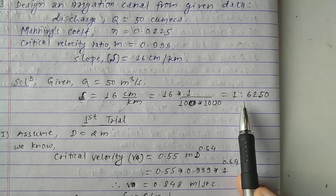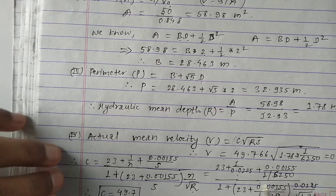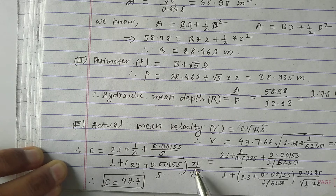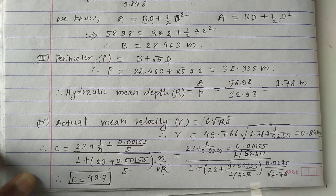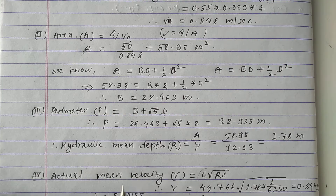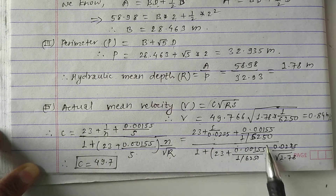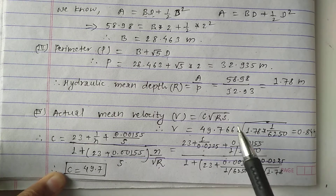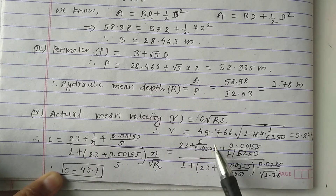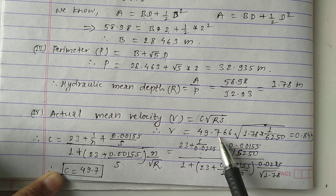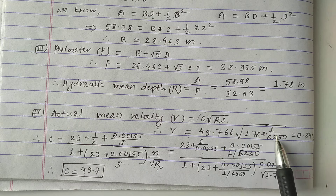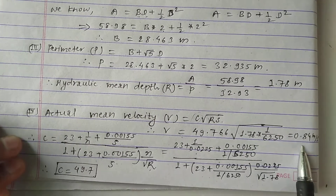Substituting S = 1/6250, η = 0.025, and R = 1.78 into the formula for C, we get C = 49.7. Now substituting into the velocity formula: V = 49.76 × √(1.78 × 1/6250). After calculating, the actual mean velocity V_a = 0.84 m/s.